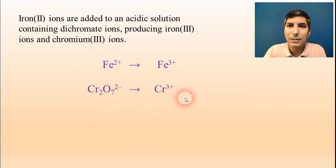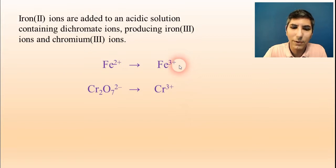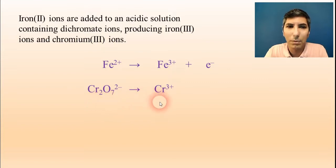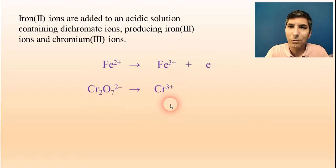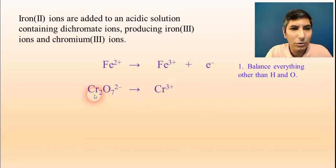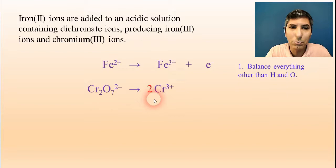Let's balance these. The first half reaction is fairly simple to balance — we have +2 versus +3, so we just need a single electron on the right side. The second half reaction is much more complicated. The first step is to balance everything other than hydrogen and oxygen. There are two chromiums on the left side, but only one on the right, so I put a 2 there to get the chromium atoms balanced.